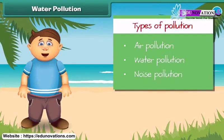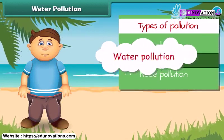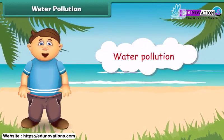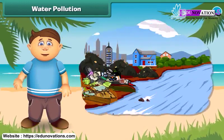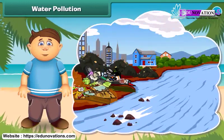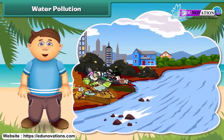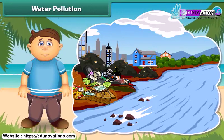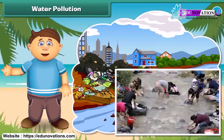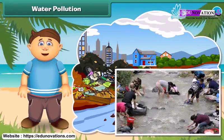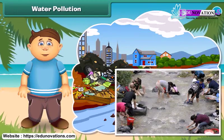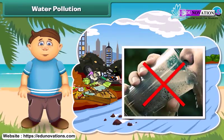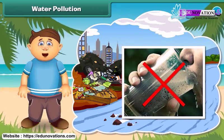Now let's know about water pollution. Like air, water also gets polluted. Look at this river — it is very dirty. It receives sewage from homes and wastes from factories. Some people also wash their clothes and throw waste into it. We should not drink this water as it contains germs and may result in diseases.